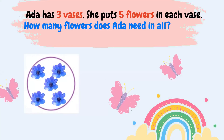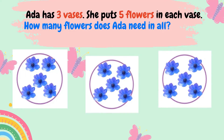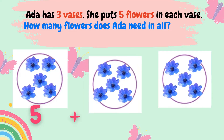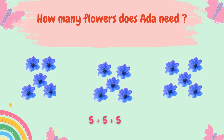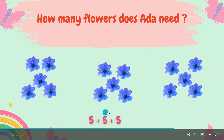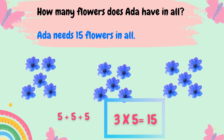Here I have my first group with five. My second group with five more. My last group of five. Do we have a repeated addition sentence in this equal group? Five plus five plus five. What is five plus five plus five? How many flowers does Ada need? Five plus five is ten, ten plus five is fifteen. Very good job! Five plus five plus five equals fifteen. And that gives me the multiplication sentence: three times five equals fifteen. How many flowers does Ada need in all? Ada needs fifteen flowers in all. We got it!